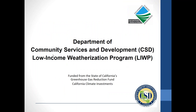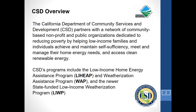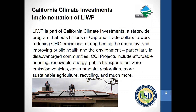Thanks, Diana and Samantha, for the opportunity to share some of our experience around introducing solar PV for low-income households and communities in California. Our department is the state's anti-poverty agency. We partner with local agencies to deliver services including the federally funded Low-Income Home Energy Assistance Program, the Weatherization Assistance Program, and the newer state-funded Low Income Weatherization Program — LIWIP — which has allowed us to extend services to include solar PV and solar thermal measures.